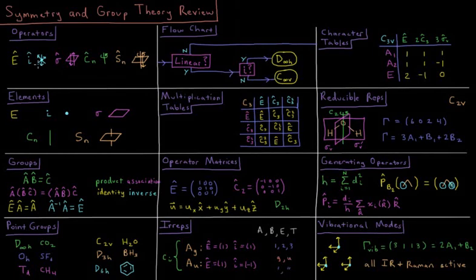These symmetry operations combined together obey the properties of what's called a group where there is some defined procedure for the product of two operators that's also a member of the group. They are associative, so doing two together and then the third is the same as doing the first and then the product of the second and third. There is always an identity element which leaves any operation unchanged, and there is an inverse element which when applied to a given operation will result in the identity.